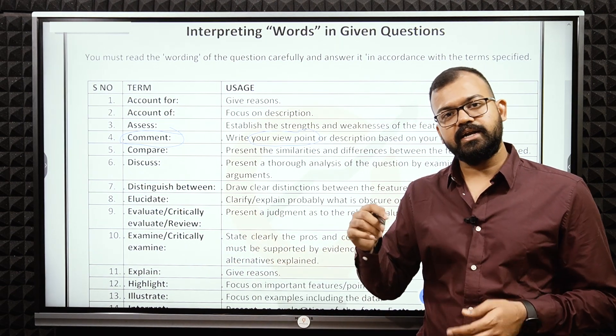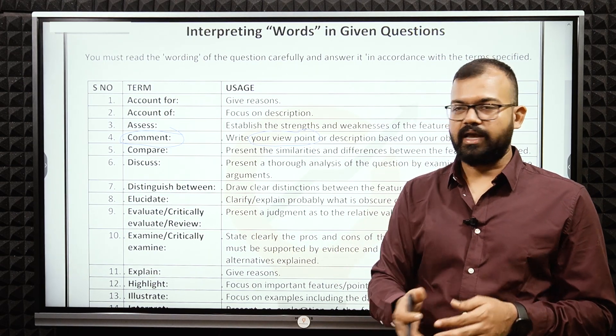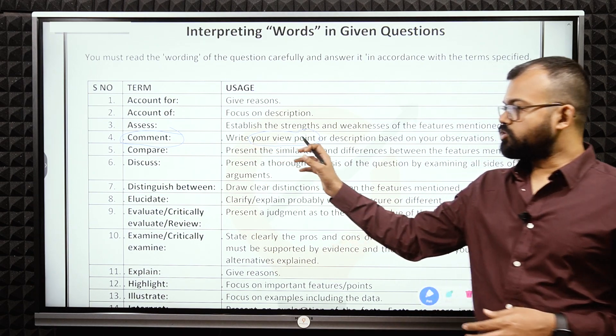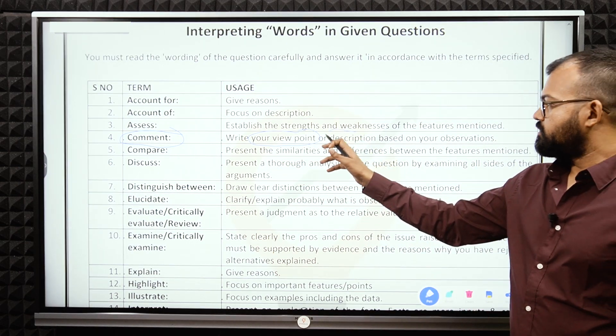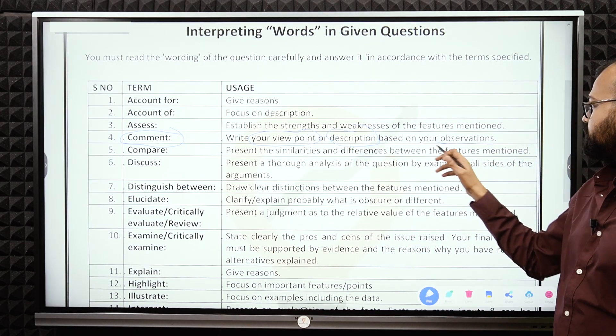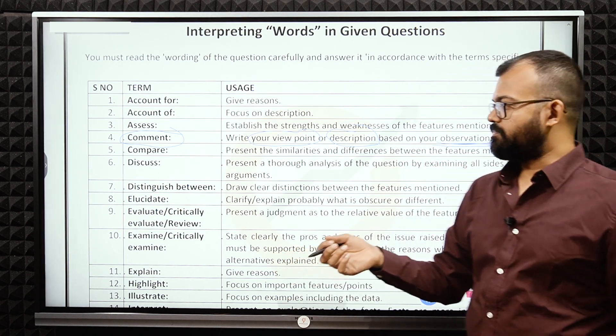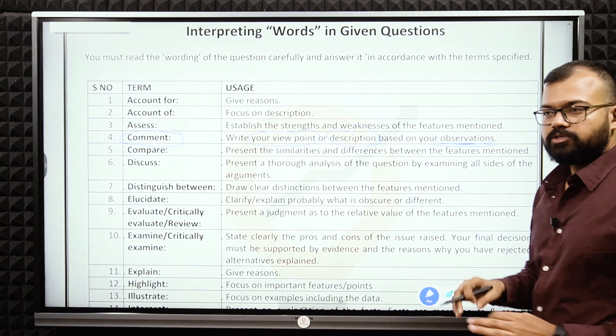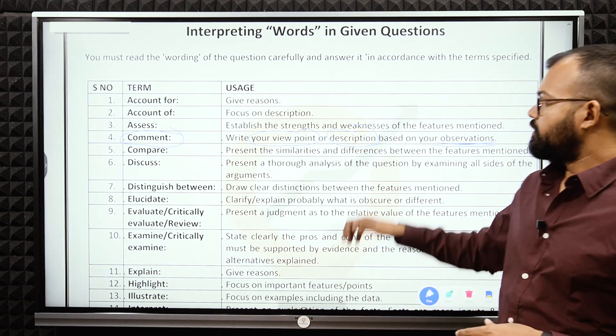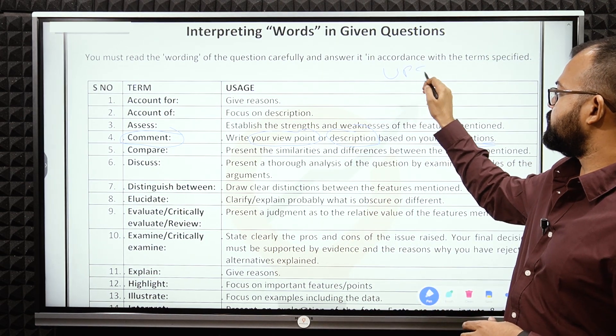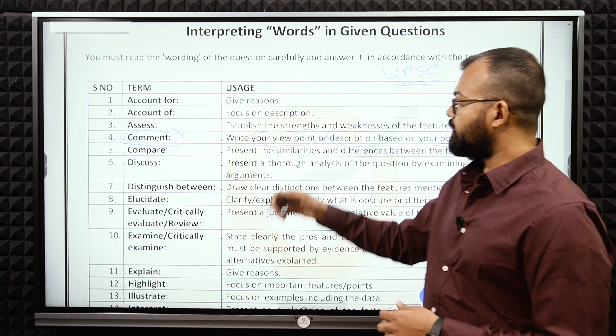But your viewpoint in the examination is 90% linked with the newspaper reporting. Because the person writing articles in the newspaper should know more than you. And that is quite acceptable. You are as an aspirant. The difference is your viewpoint required, not your own viewpoint. I'll let you know where your own viewpoint is required. The second is description based on your observation.